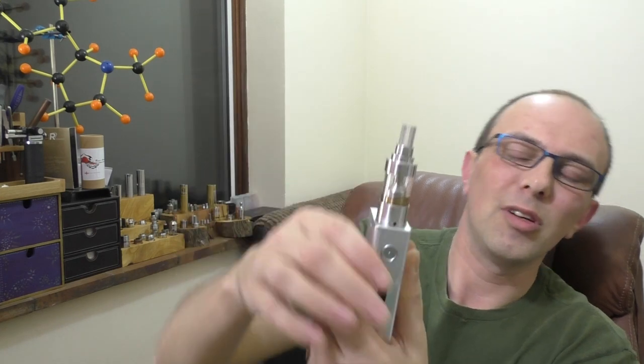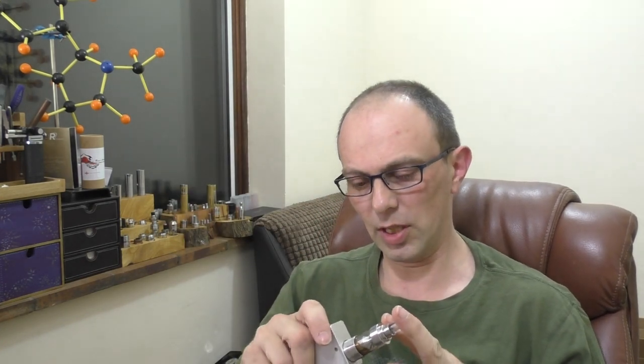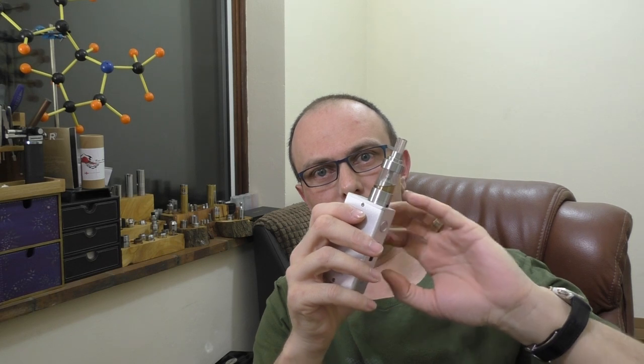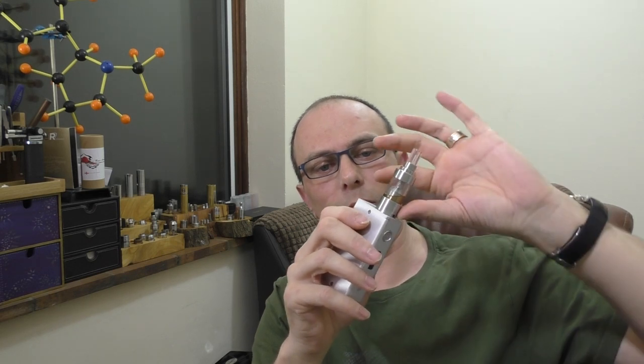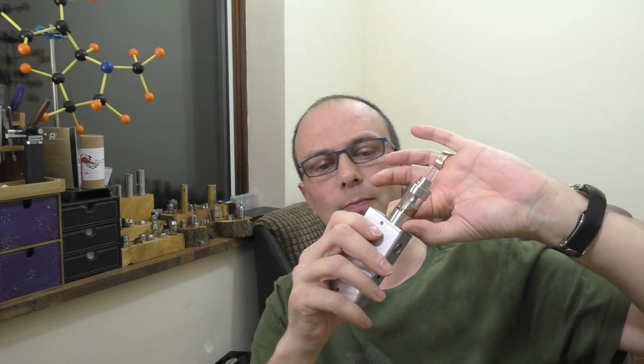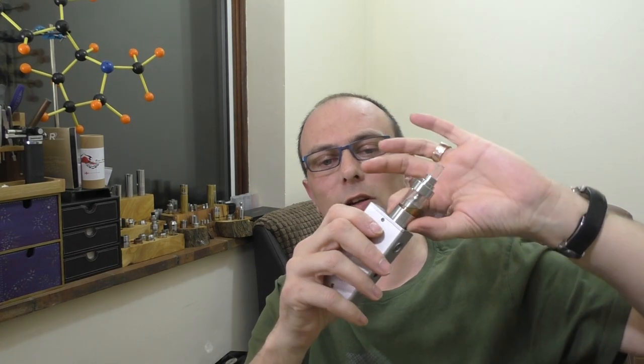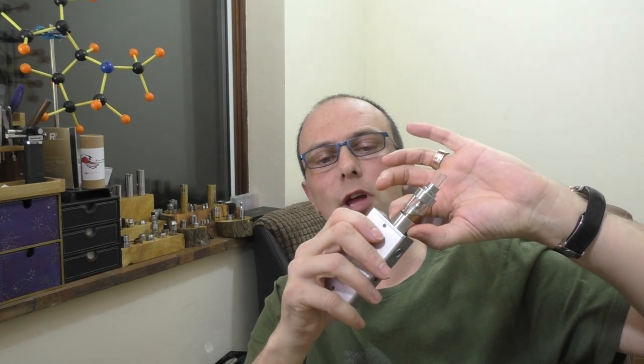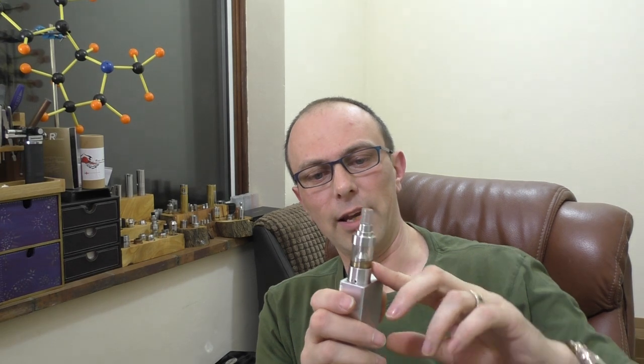If however I put it on a box mod, something like especially this particular Smok which has the little recess in it, and there's a few boxes that have that, you can't really very easily grab it from the sides. You have to kind of grab it from the top. And it's a fiddle basically.